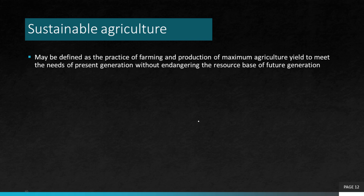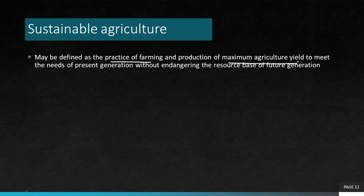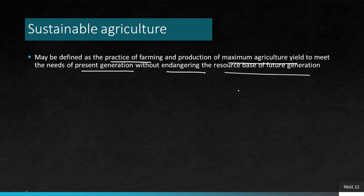So conventional agricultural practices are coming back — if you've heard of organic farming, it's coming back. Conventional farming with locally available good quality seeds, compost, and bio-fertilizers which are more eco-friendly are being used more so that they can reduce ecological damage. This is what is known as sustainable agriculture — it may be defined as a practice of farming and production of maximum agricultural yield to meet the needs of the present generation without endangering the resource base of future generations.